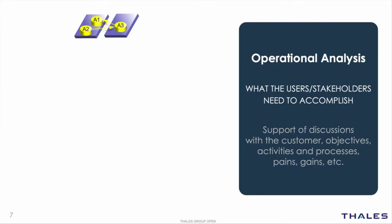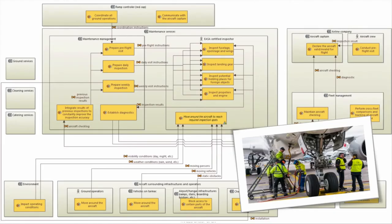We start with an operational need analysis where we focus on what the users of the system need to accomplish. One of the goals of the operational need analysis is to support the discussion with the customer. The operational need analysis of our product describes the stakeholders and their activity: maintenance services, the certified inspector, the airline company, and the aircraft captain.